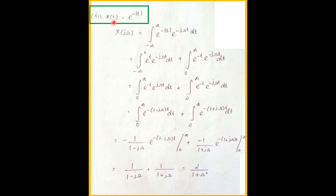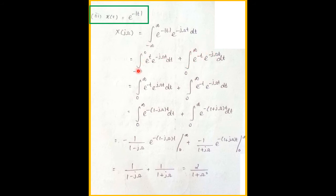Next problem: x(t) = e^(−|t|). The modulus means we take both +t and −t values. So X(jω) = integral from −∞ to ∞ of e^(−|t|) e^(−jωt) dt. We split this: e^(+t) has limits from −∞ to 0 (left-hand side graph), and e^(−t) has limits from 0 to ∞ (right-hand side graph). Now we integrate both parts.